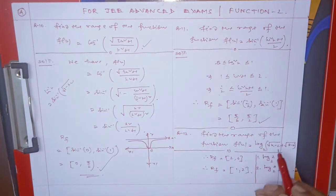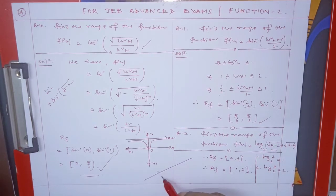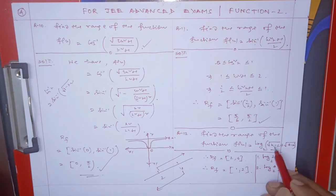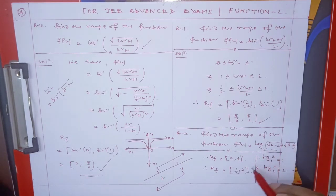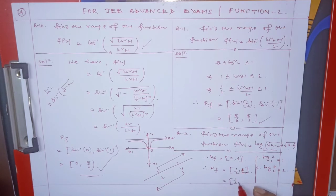Find the range of f(x) = log(x-2) [with constraints]. The expression is defined when x ≥ 2 and x ≤ 4, so the domain is [2, 4]. At x = 2: the log term gives 0 and √2 term gives ½. At x = 4: similarly gives ½. At x = 3: each log equals 1, giving log 2 / log 2 = 1. Therefore the range is [½, 1].